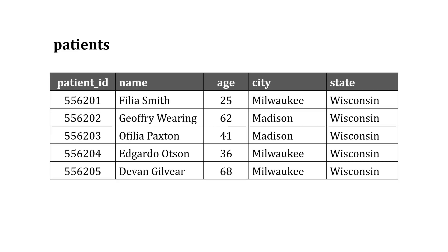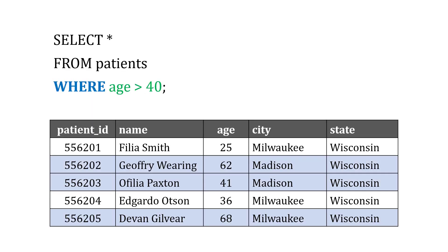To try this out, let's look at a patients table. We've got data about patients at a doctor's office. Maybe what I want is only patients returned that are older than 40. So we'll say WHERE the age is greater than 40, and it looks like three patients get returned in this scenario.